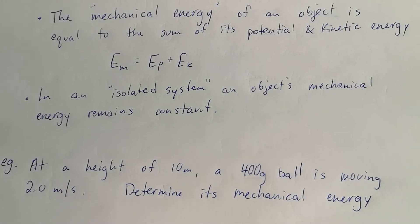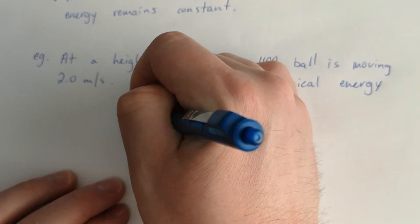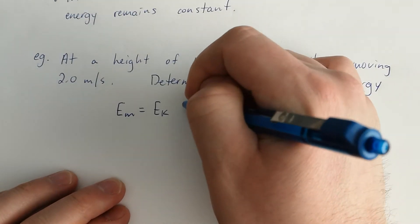Okay, I want to do a quick example. That's going to be really simple. So I'm saying at a height of 10 meters, this 400 gram ball is moving 2 meters per second. To find its mechanical energy, we just do Ep plus Ek.